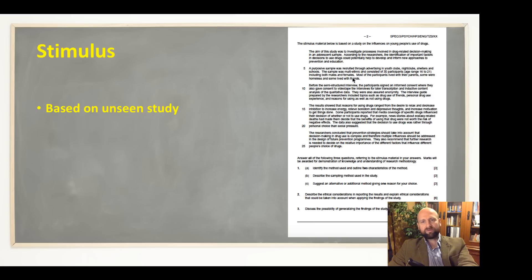This is a cover of a Paper 3, and then here we have what the reverse side looks like. So the stimulus is an unseen study. Now this is how Paper 3 differs from 1 and 2—you don't have to remember and revise the studies.